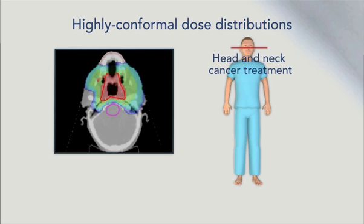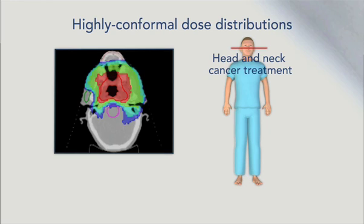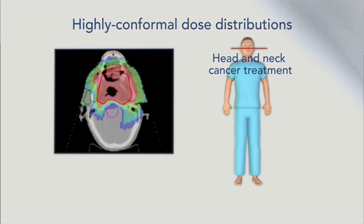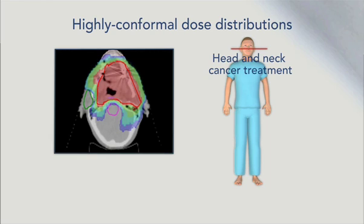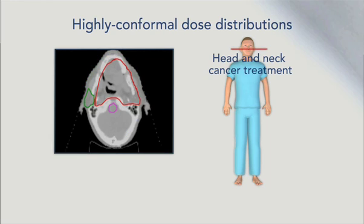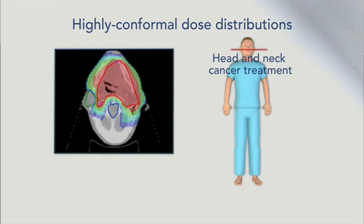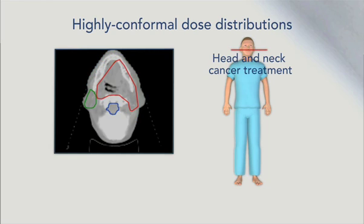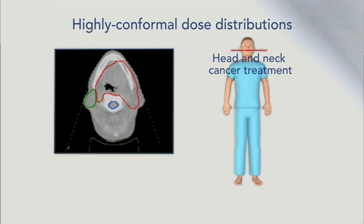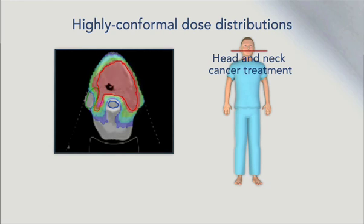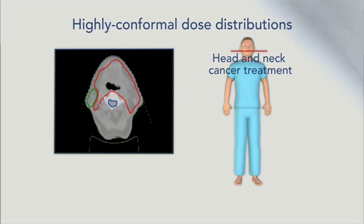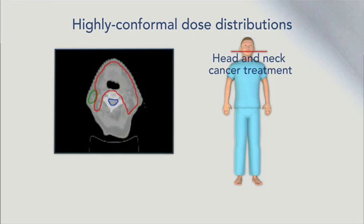Shown here are CT scans with overlaid structures and dose levels from a head and neck cancer treatment plan. The tumor indicated by the red outline is covered by the prescription dose, shown by the solid red color. The adjacent blue spinal cord and green parotid gland receive a very low dose. Our unique technique enables a sharp distinction between tumor dose and dose to nearby critical tissues. The parotid glands produce saliva, and maintaining their function after radiotherapy treatment has always been a difficult challenge.